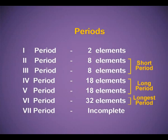Period 1 has two elements. Period 2 has eight elements. Period 3 has again eight elements, and the second and third periods together are known as the short periods. Period 4 has 18 elements. Period 5 has 18 elements. Groups 4 and 5 are known as the long periods. Period 6 consists of 32 elements — the longest period.